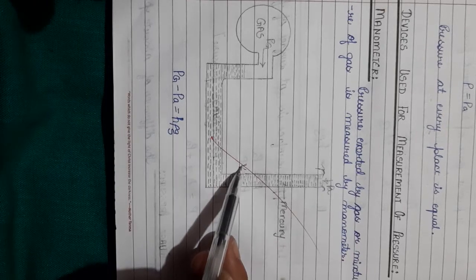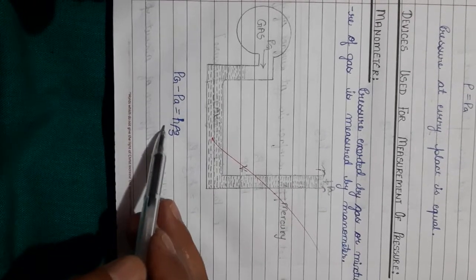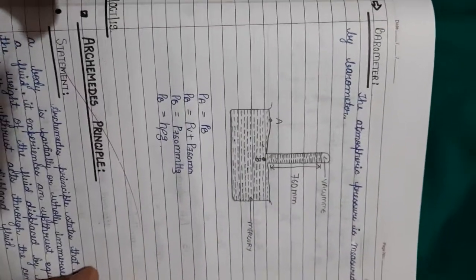The rise of liquid in this column equals h × ρ × g. This is called a manometer. Another device is the barometer.